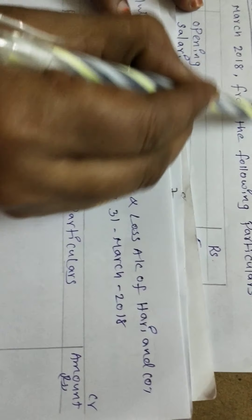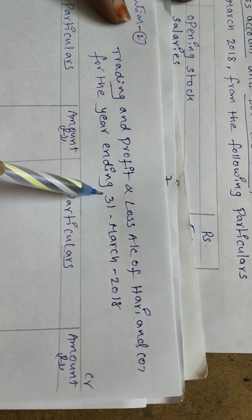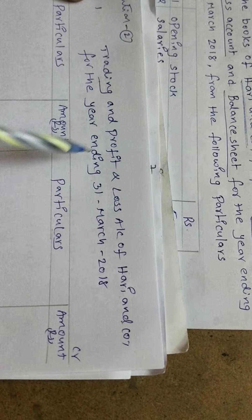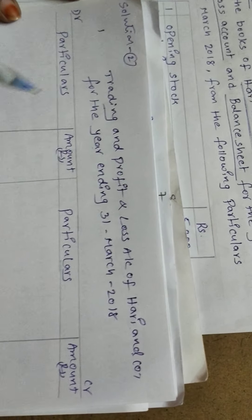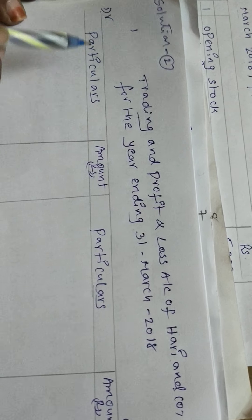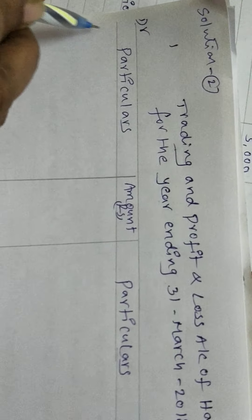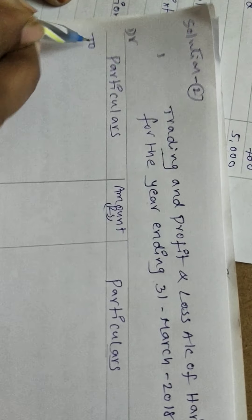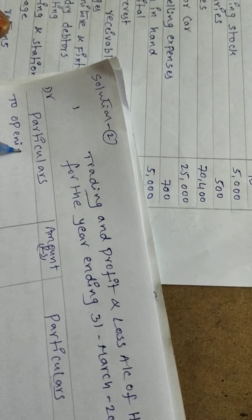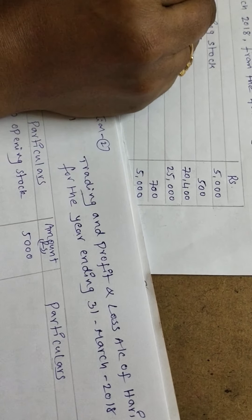This is the format of the trading and profit and loss account for Hari and Company for the year ending 31st March 2018. As per the format, the first item is opening stock: 'To opening stock' — 5,000.